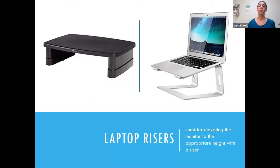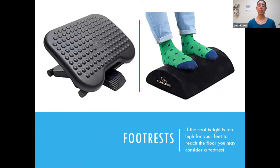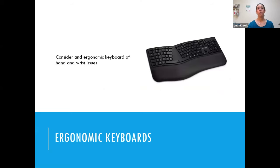Laptop risers are great for putting your screen at the correct height. If you don't have a riser, you can use telephone books or regular books. Footrests are also available on Amazon or you can use telephone books or a box. Some footrests are adjustable for different angles and heights. You want your feet to reach the floor — if they don't, a footrest is an option.